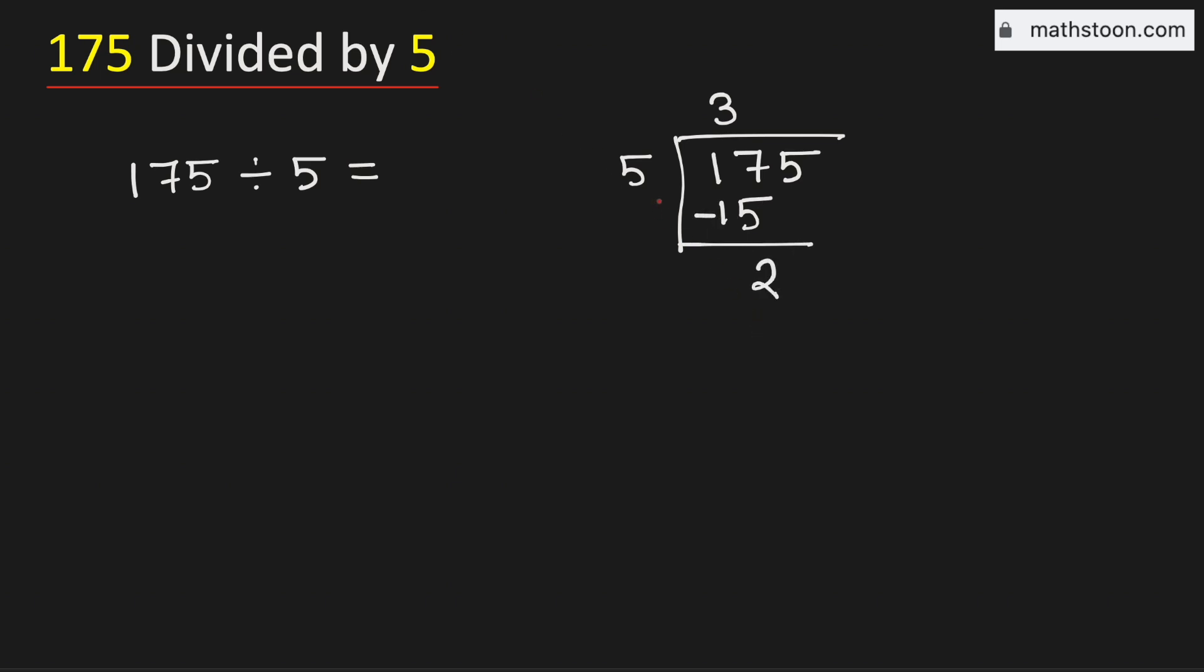Now, 2 is less than 5, that is why we will bring down this number 5 here. Now, we know that 5 times 5 is 25. Subtract, we get 0.